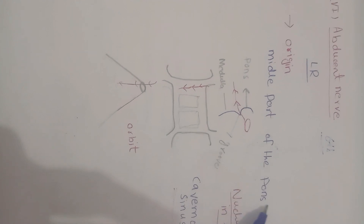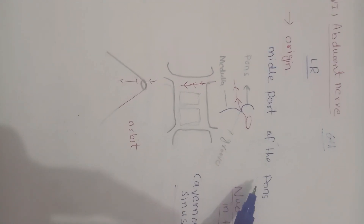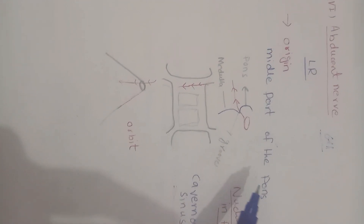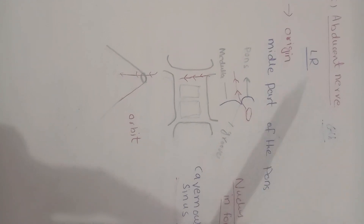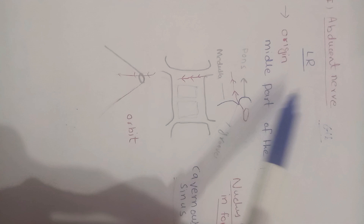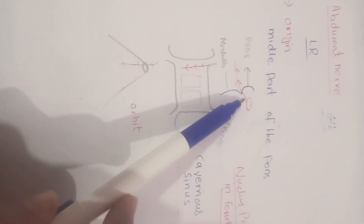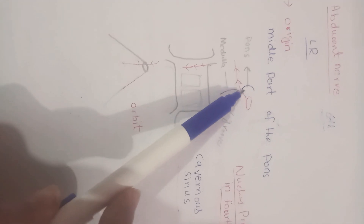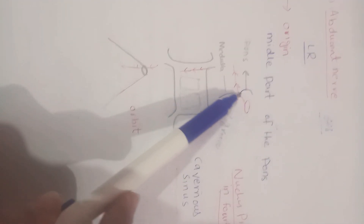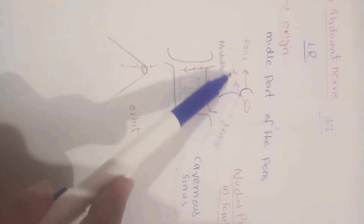The pons is part of the hindbrain, which consists of the pons, medulla, and cerebellum. The nucleus of the abducens nerve, the sixth cranial nerve, is present in the fourth ventricle, and the nerve fibers originate from there.